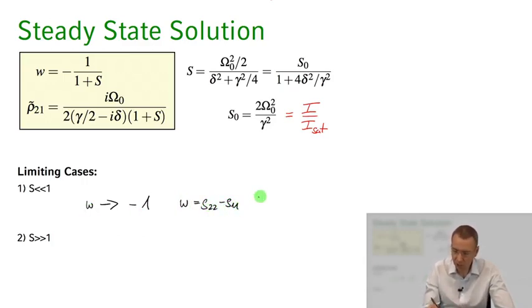And inversion approaching minus one means the atom is in the ground state. Atom is mainly in ground state.